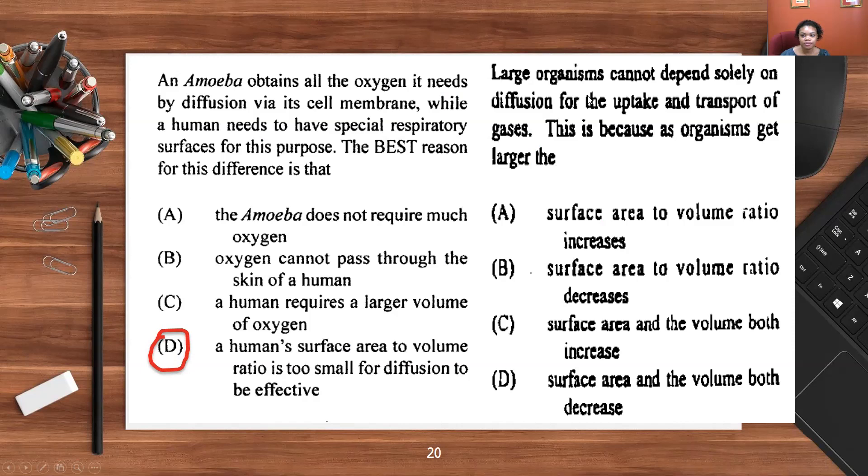Next question: Large organisms cannot depend solely on diffusion for the uptake and transport of gases. This is because as organisms get larger, the A, surface area to volume ratio increases; B, surface area to volume ratio decreases; C, surface area and volume both increase; or D, surface area and volume both decrease. We can use the process of elimination. We can highlight the key here: large organisms. As organisms get larger, their surface area to volume ratio decreases. The ones that say both we could eliminate and focus on A and B, and B is the correct answer.